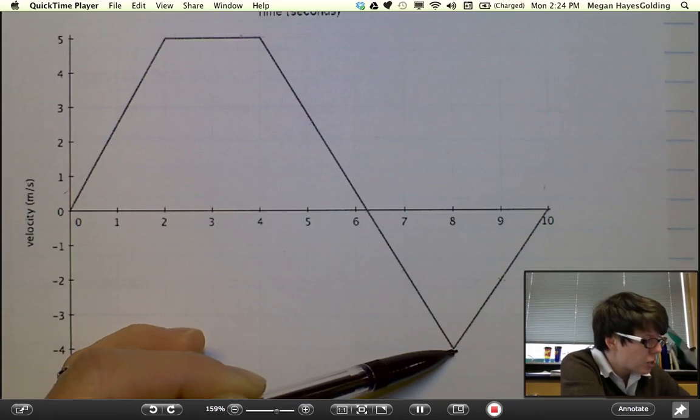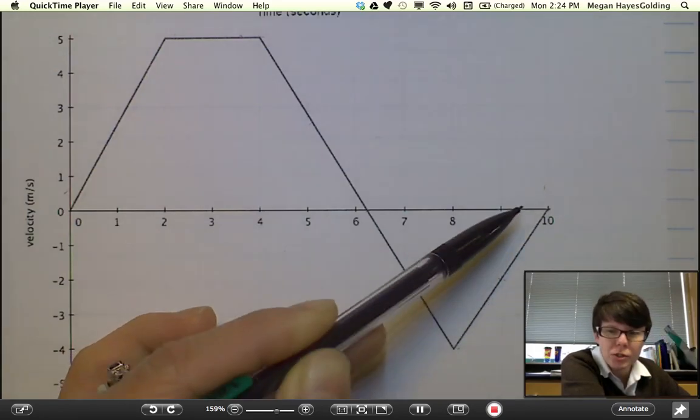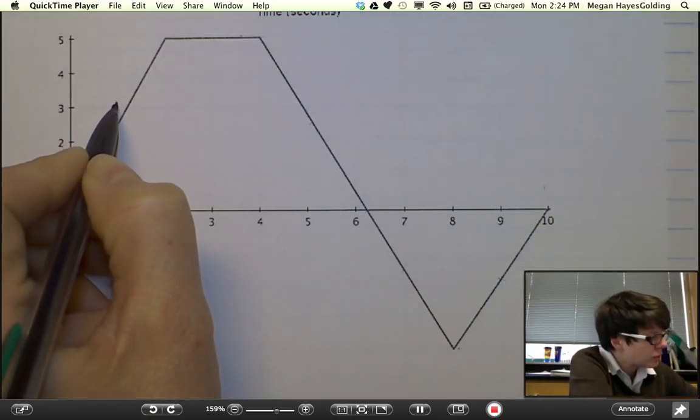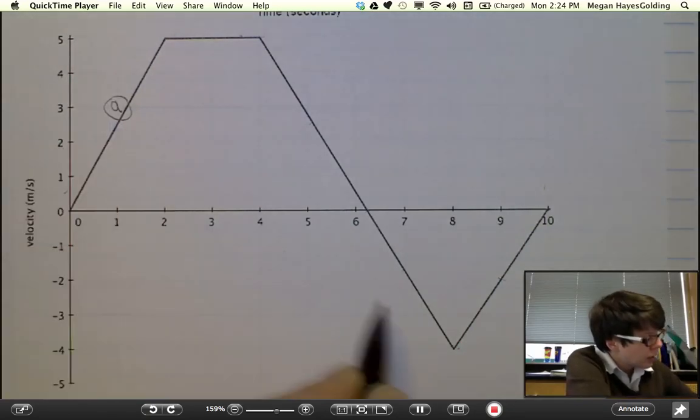At this point, his velocity is going from negative 4 back towards 0. Not an acceleration. So the two accelerations on this graph are here and here.